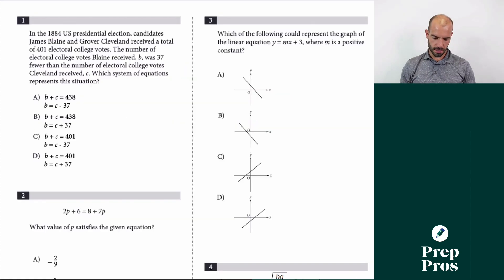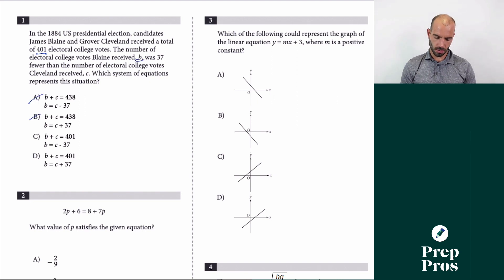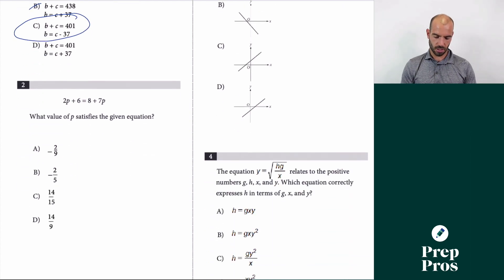Number 1: as I read it, it has 401 total votes, which means the answer choices have to add to 401, so I can eliminate A and B. It says B is 37 fewer than C, so we subtract to make them equal — number 1 is C. Number 2: doing the math, subtract 2p from both sides giving 5p, subtract 8 giving negative 2, divide by 5 — answer is negative 2/5, which is B.